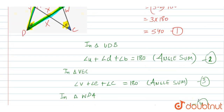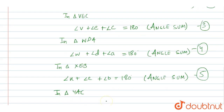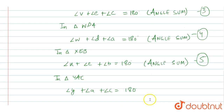The last triangle is YAC. In triangle YAC we can say: angle Y plus angle A plus angle C equals 180°, again by the angle sum property. This is equation 6.